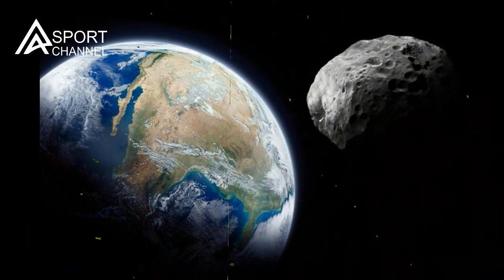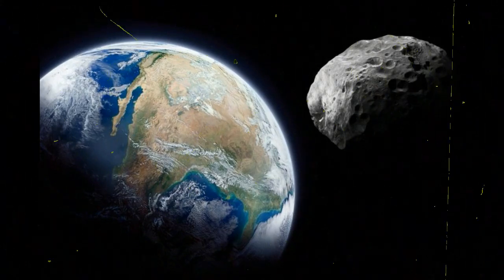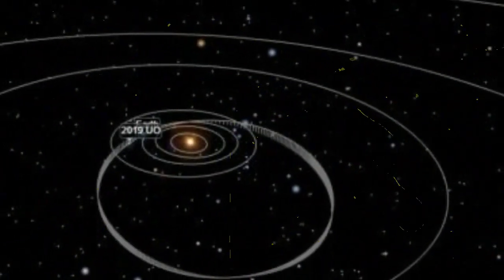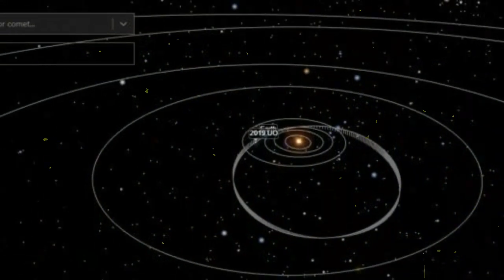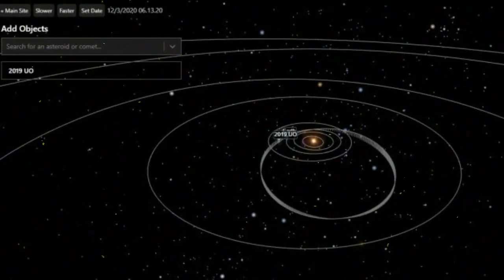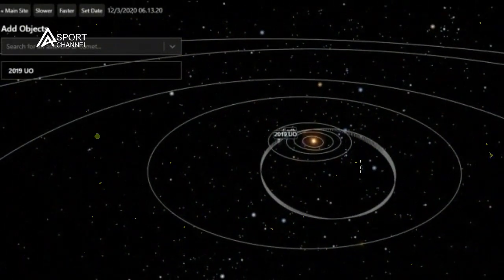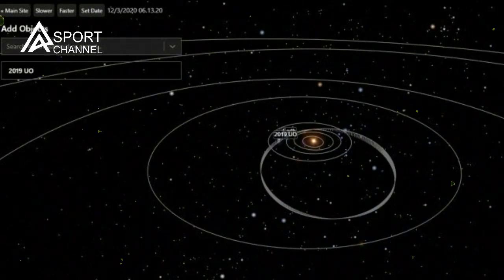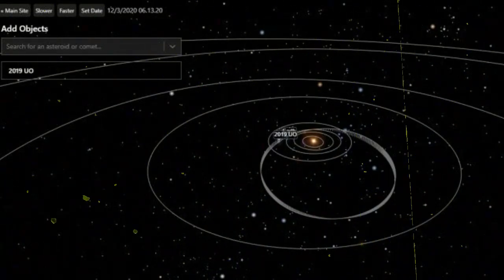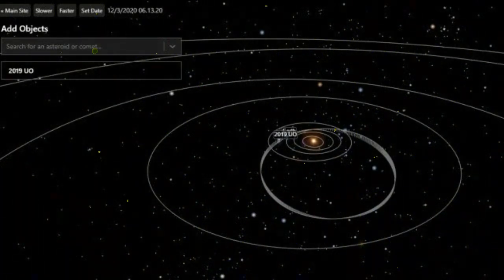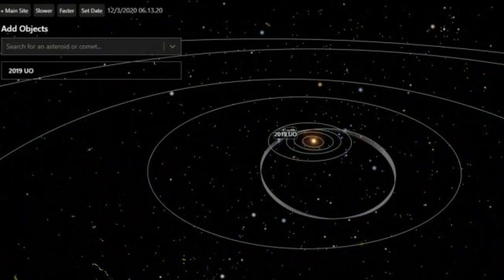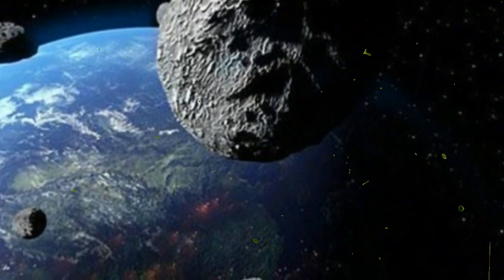NASA is also investigating defensive technologies for protecting Earth from possible collisions with larger space rocks through deflection. The Double Asteroid Redirection Test (DART), scheduled to launch November 24, will test a method for diverting asteroids by hitting them with high-speed remote-controlled spaceships, NASA representatives said in a statement.